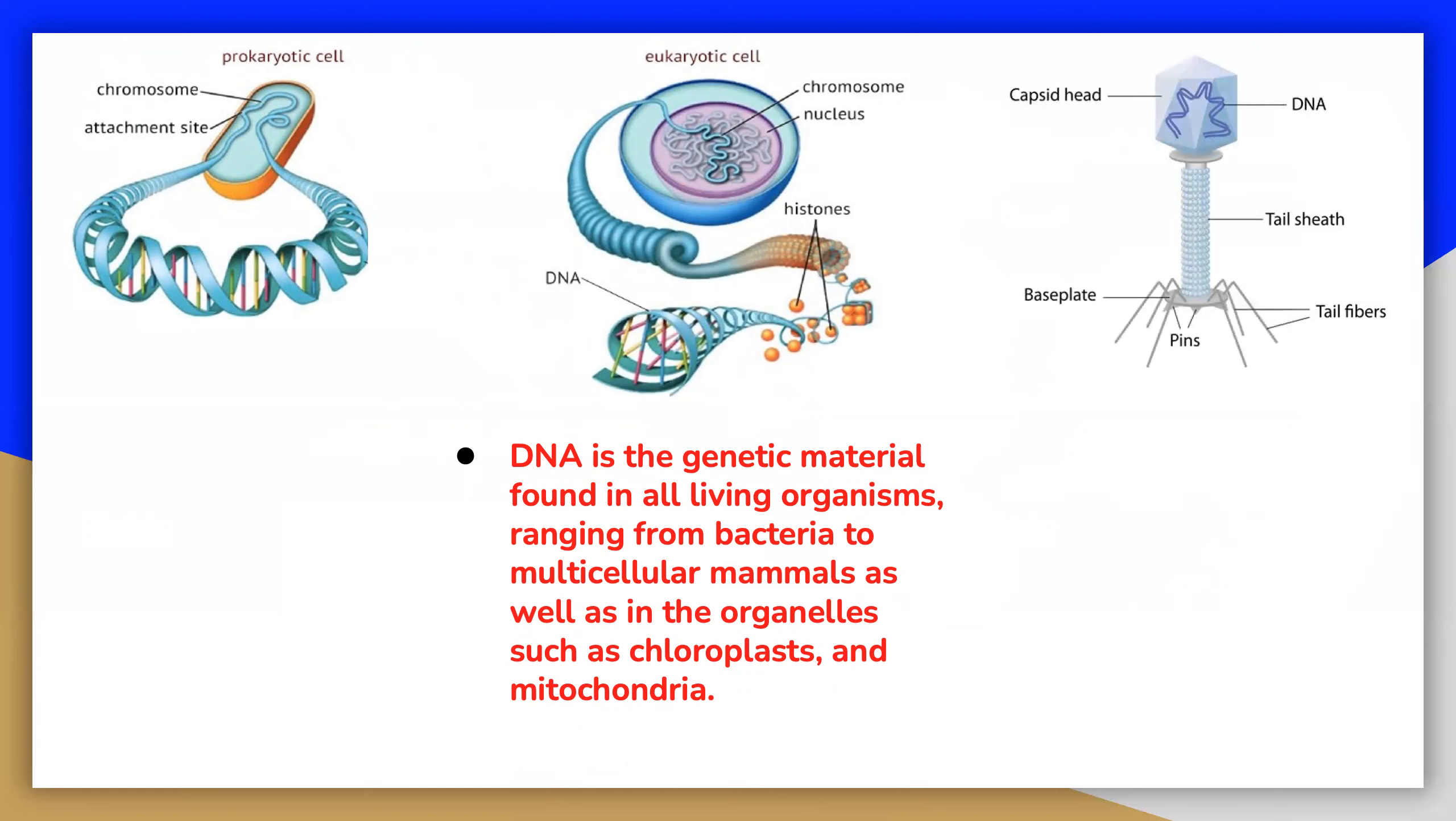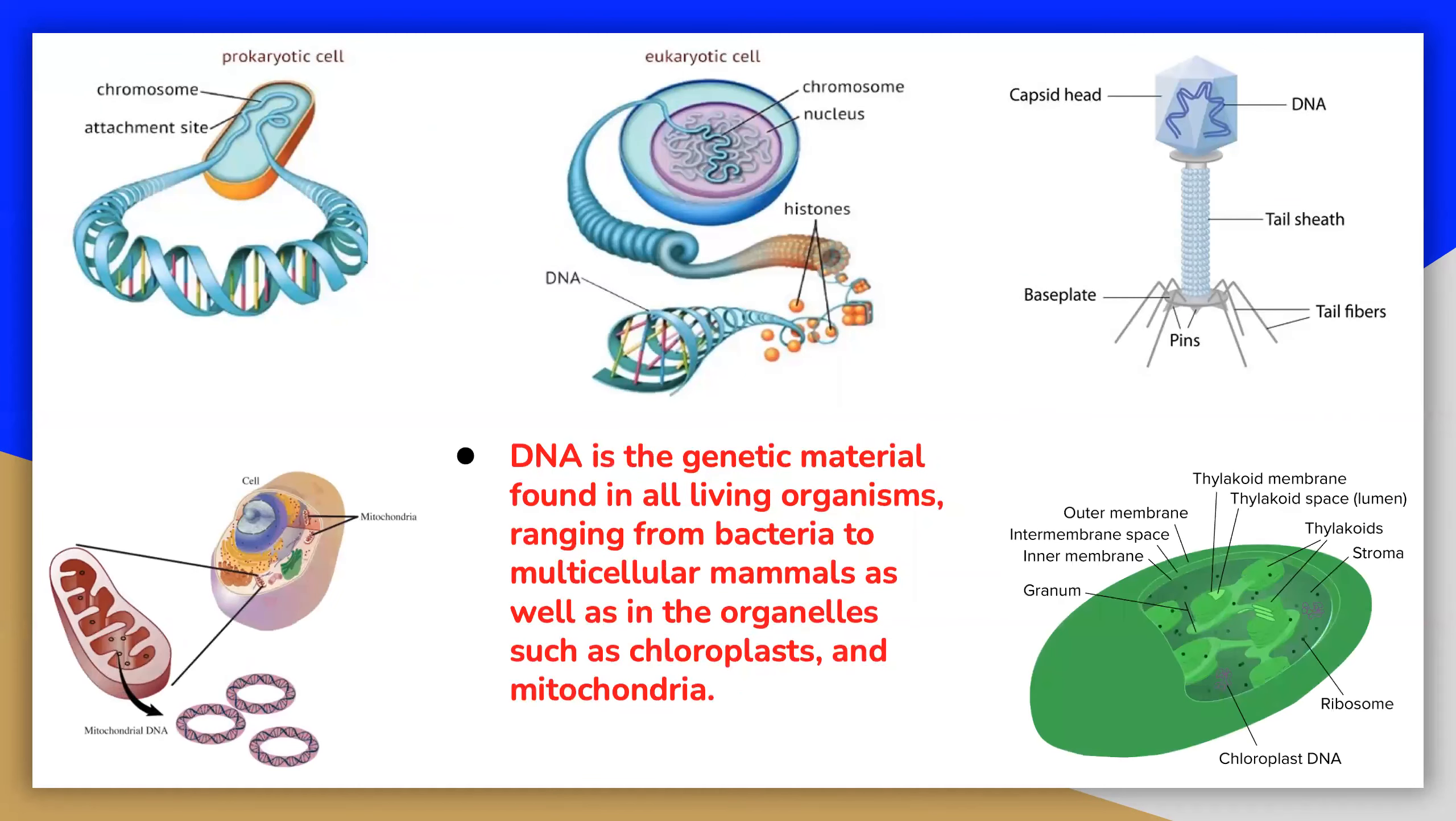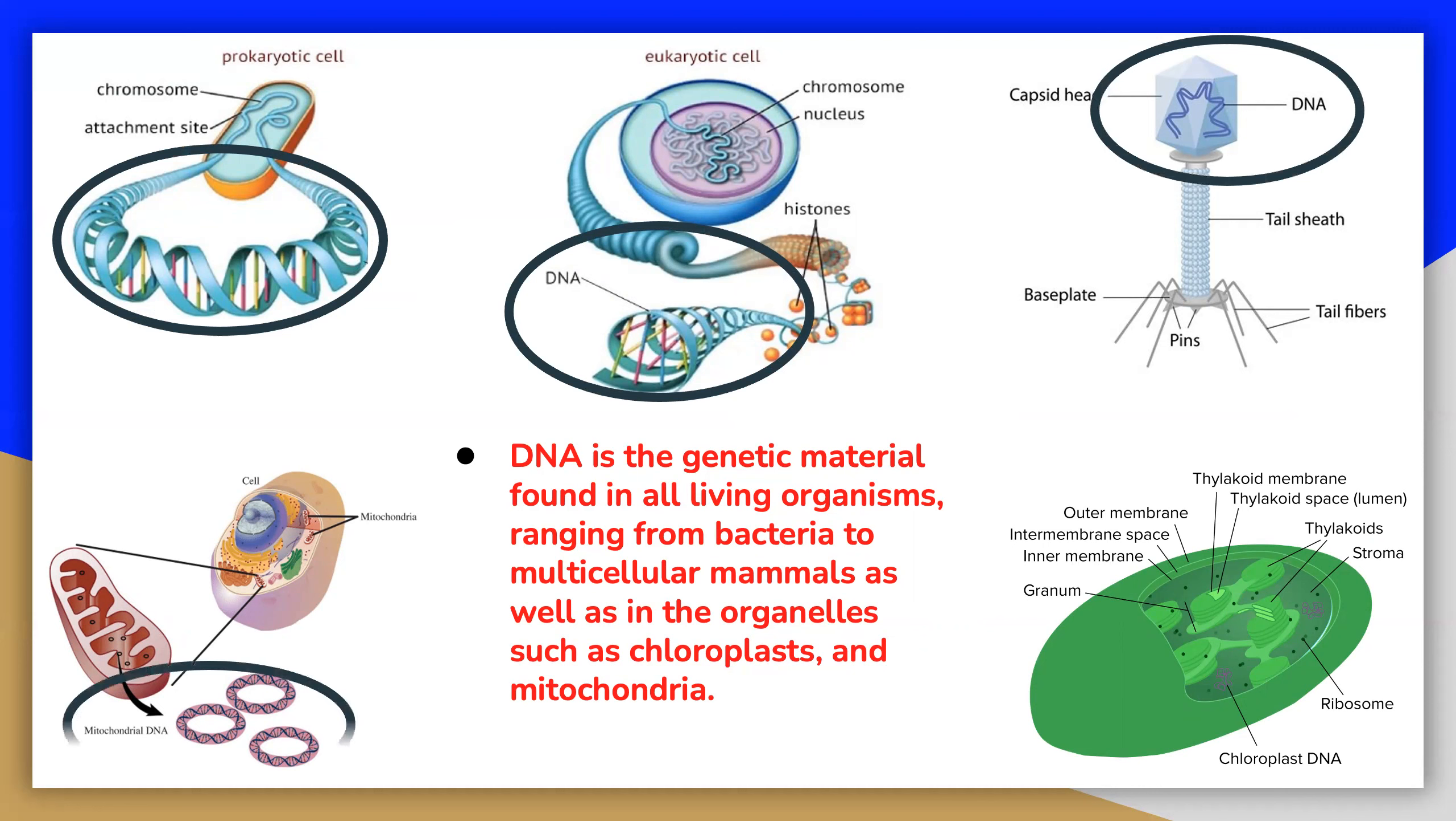It is found in the nucleus of eukaryotes and in the organelles such as chloroplasts and mitochondria. DNA does more than specify the structure and function of living things. It also serves as the primary unit of heredity in organisms of all types.